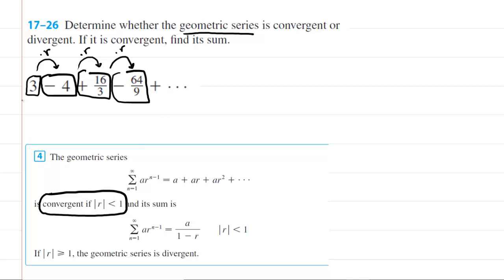And so, of course, we need to figure out what the common ratio is. And you can do this in any number of ways, but if we take the first term, which was 3, and multiply it by the common ratio, which is r, we should get negative 4. And so all we need to do is solve this little equation for r.